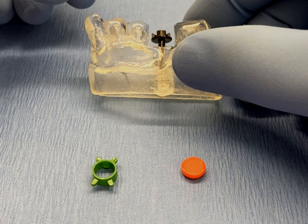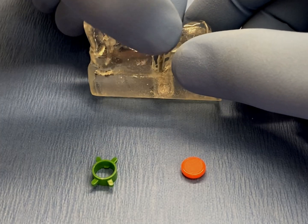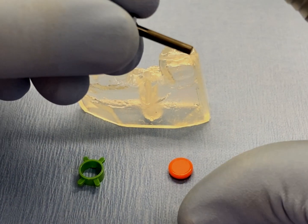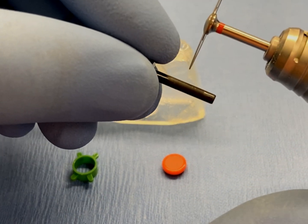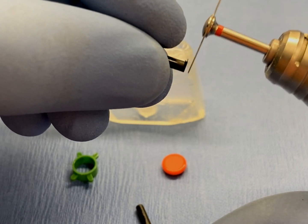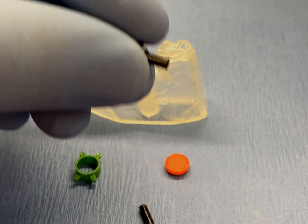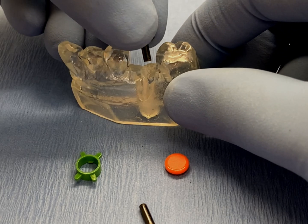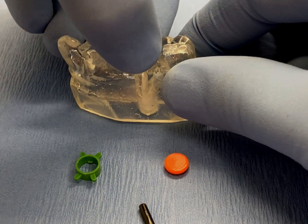If the locator pin shaft is too long for a specific application and requires adjustment to maximize surgical access, simply remove the locator pin from the model and cut the shaft using a separating disc. Once the shaft of the locator pin has been cut, remove any burrs created during the cutting process in order to ensure smooth insertion into the surgical model.